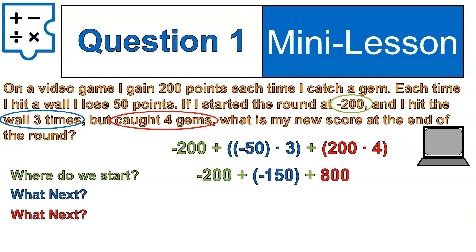Let's go ahead and figure out what my score would be. I start with negative 200. I'm going to add on negative 150 for how many times I hit the wall, and then add on 800 points for how many times I catch those gems. When you add those together, we go left to right: negative 200 plus negative 150 gives us negative 350. We add 800 to that for our final point value of 450. We have 450 points at the end of this round.